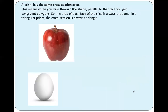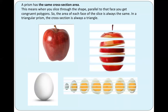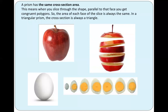Do you think the apple can be a prism, or the egg? Let's have a look. The area of the cross-section is not the same, so it is not a prism. The area of the slices of the cross-section is not the same, so it is not a prism.